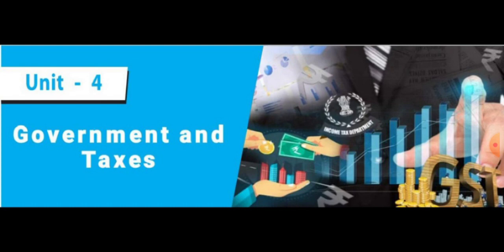This GST Act came into effect on 1st July 2017. The structure of GST has three types: State Goods and Services Tax (SGST), Central Goods and Services Tax (CGST), and Integrated Goods and Services Tax (IGST) — that means local goods and services tax.